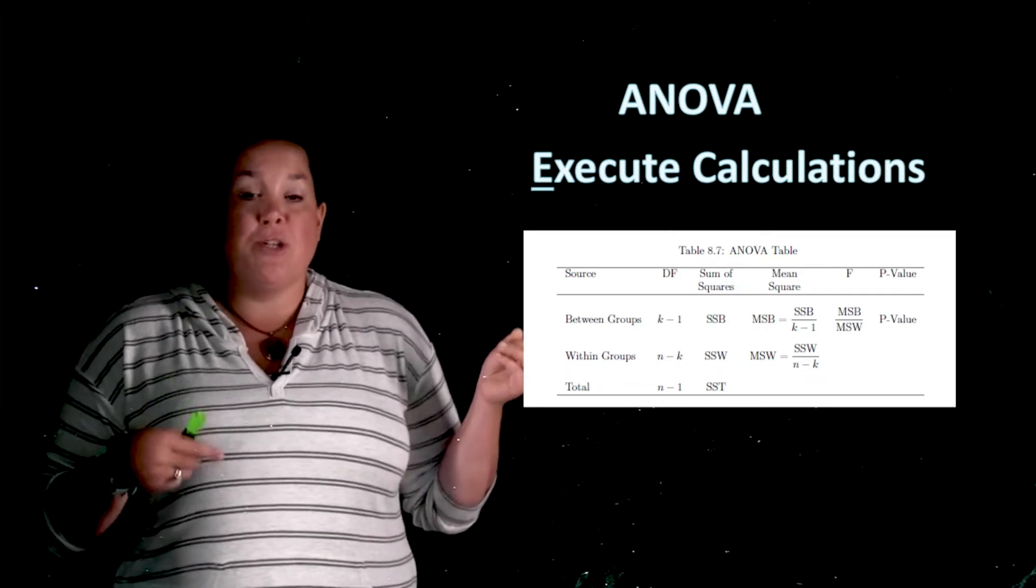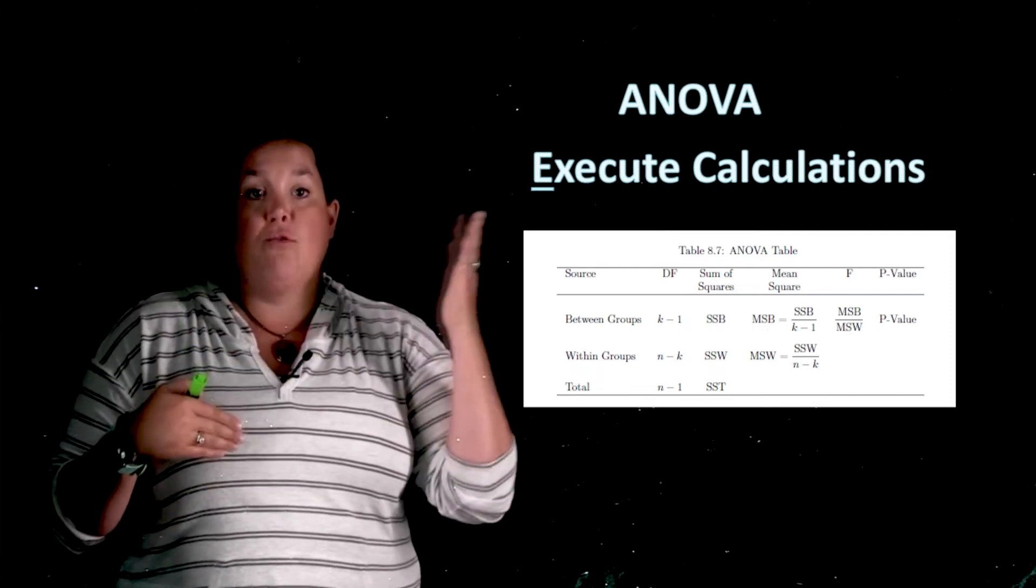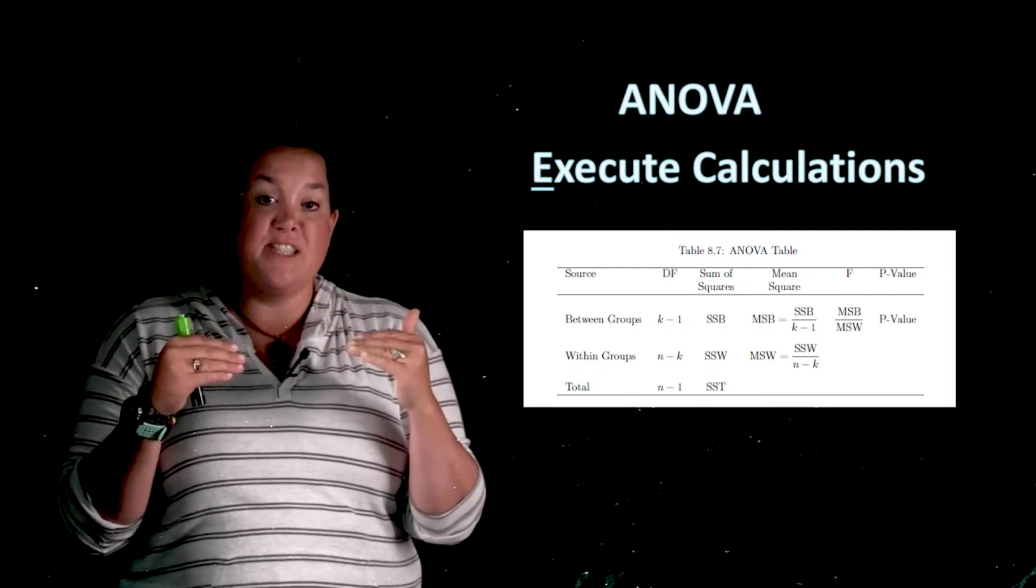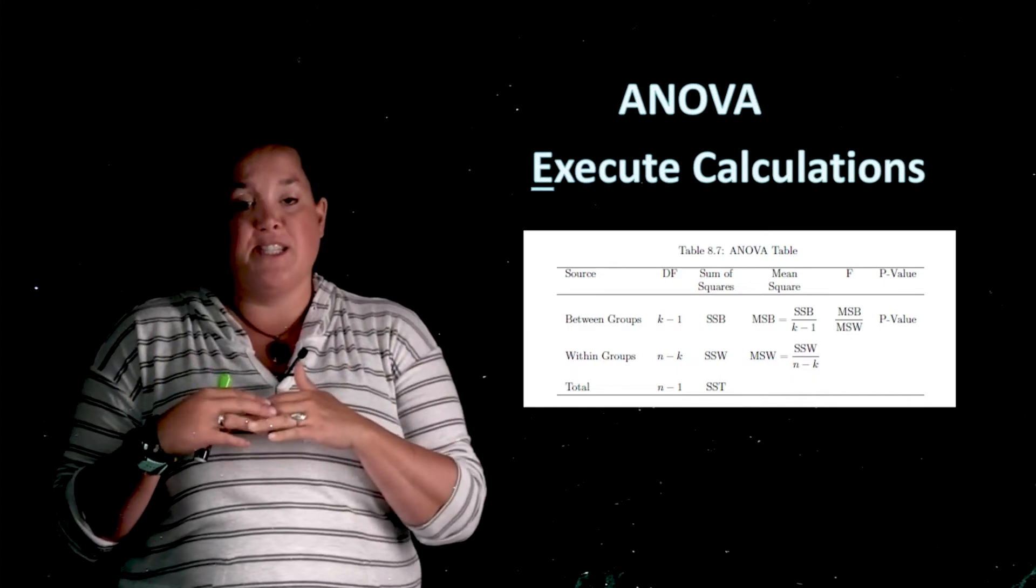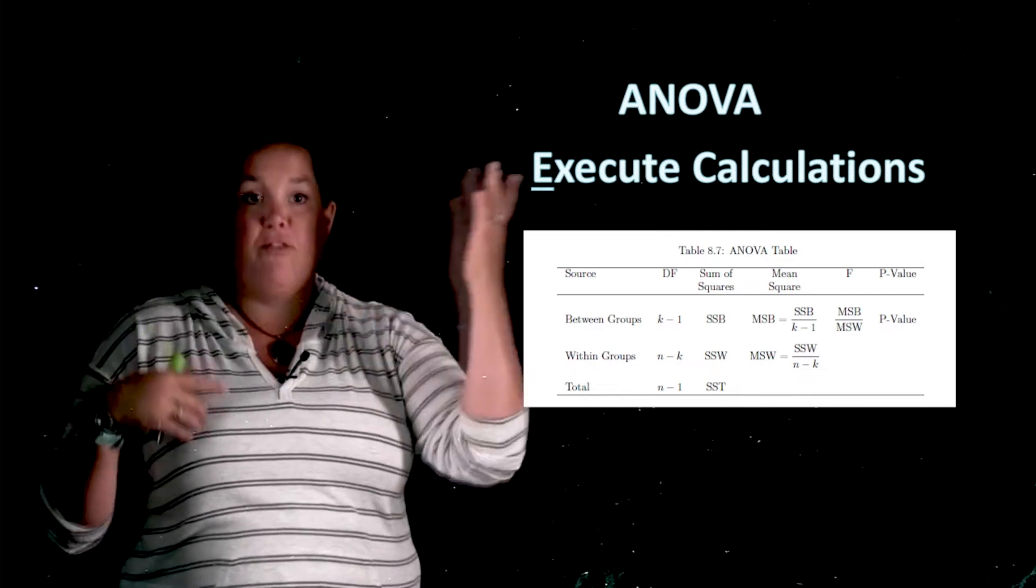A couple things that I want to note: you can see that the test statistic has the notation F. So for an ANOVA we have an F test statistic. Remember that test statistic is actually a generic term and here we have specifically an F for the ANOVA.